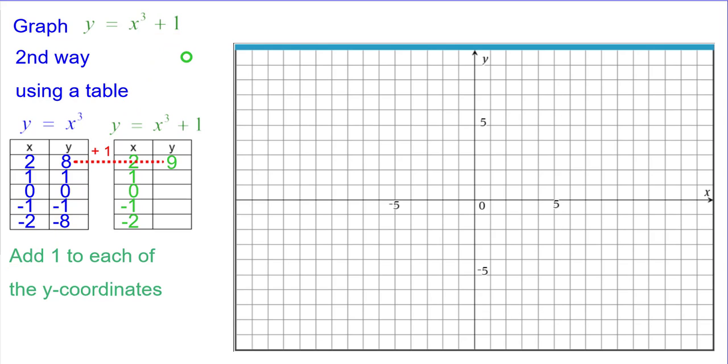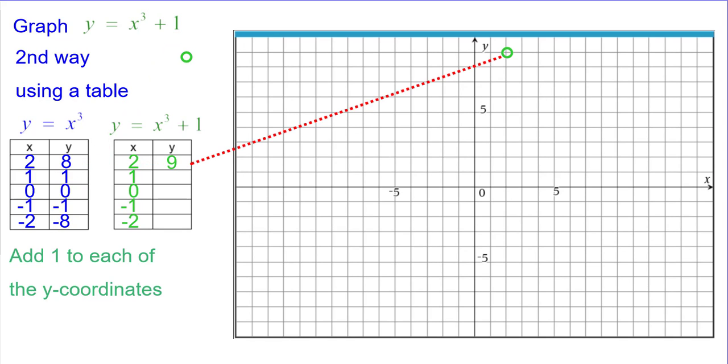So when I take 8 plus 1, I get 9. So I'll plot the ordered pair 2 comma 9. 1 plus 1 is 2, so 1 comma 2. 0 plus 1 is 1, so I'll get 0, 1.